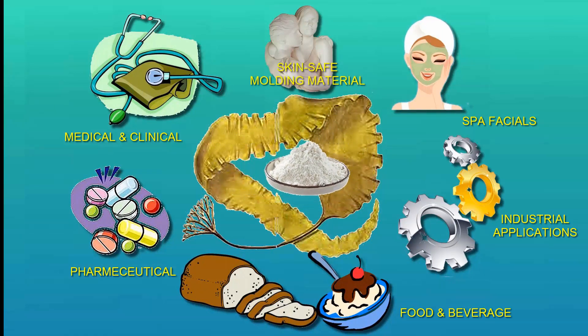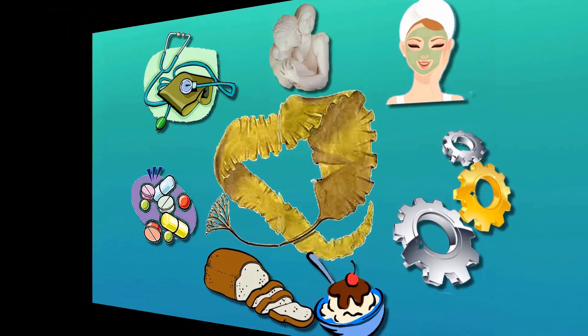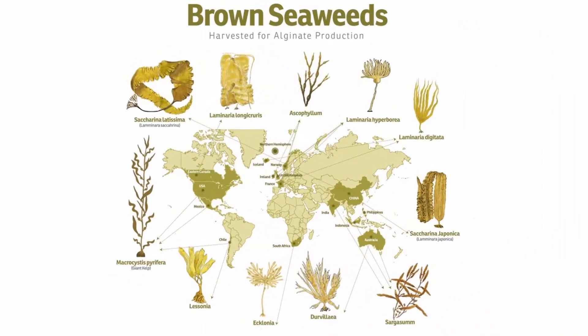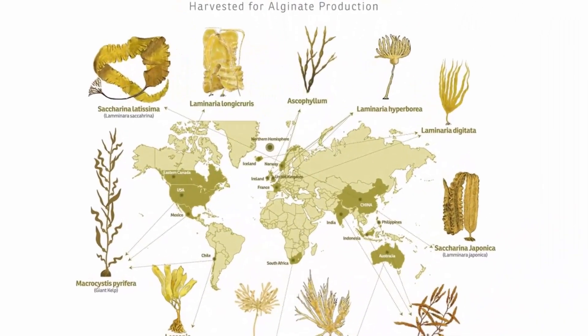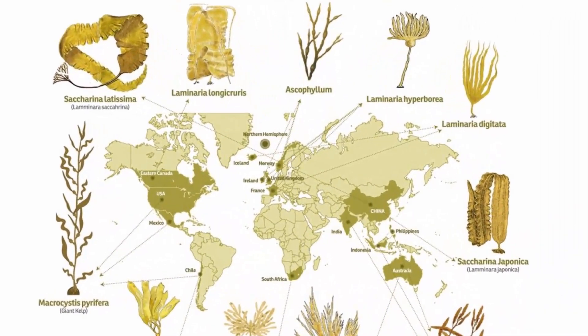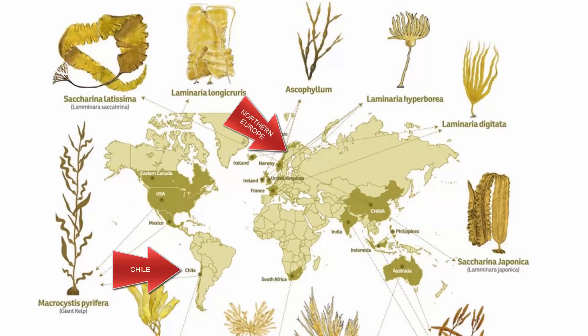Refined alginate is derived from the cells of brown seaweed, which is available throughout the world, but primarily from Northern Europe, Chile, China, and our West Coast.